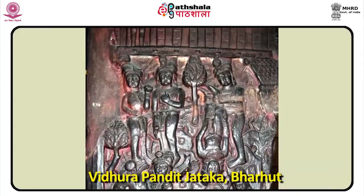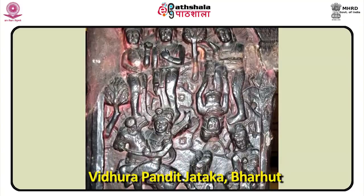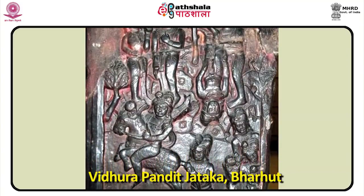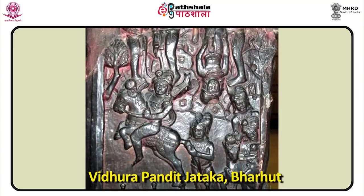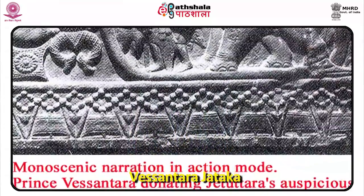Some Jatakas are as follows. In the Vidura Pandita Jataka, a yaksha called Punnaka falls in love with a princess. To seek permission to marry her, he goes to her father, who demands the minister of a neighboring kingdom called Vidura Pandita, known for his wisdom. The yaksha wins Vidura Pandita in a game of dice, and on his way back tries to kill him by hanging him upside down. But the pandita tells Punnaka that if he kills him, his purpose would be defeated. Thus Vidura Pandita reaches the king, teaches him important lessons, and the king returns the pandita.